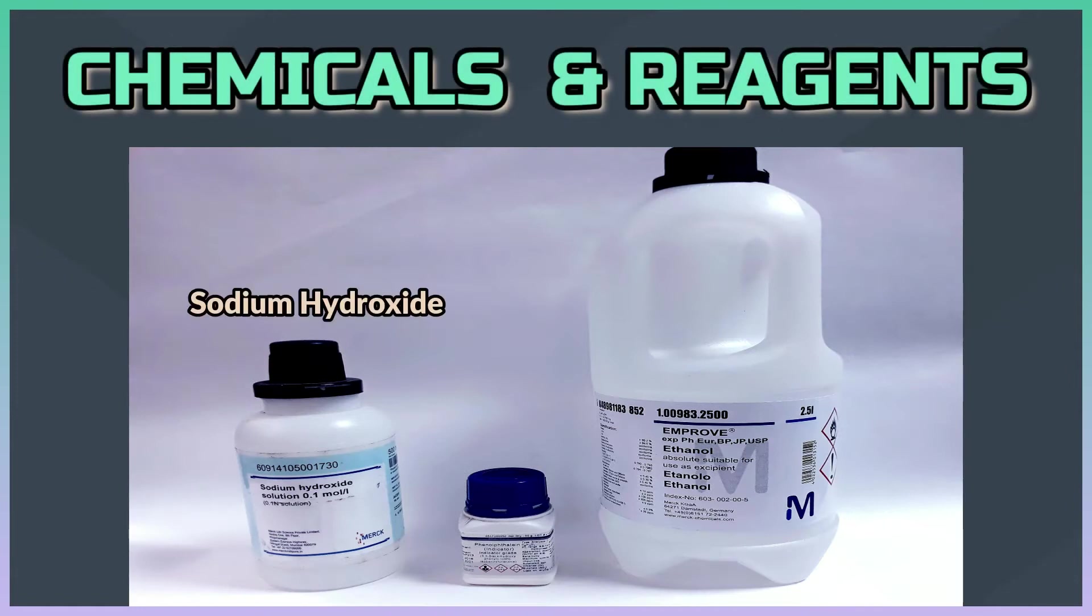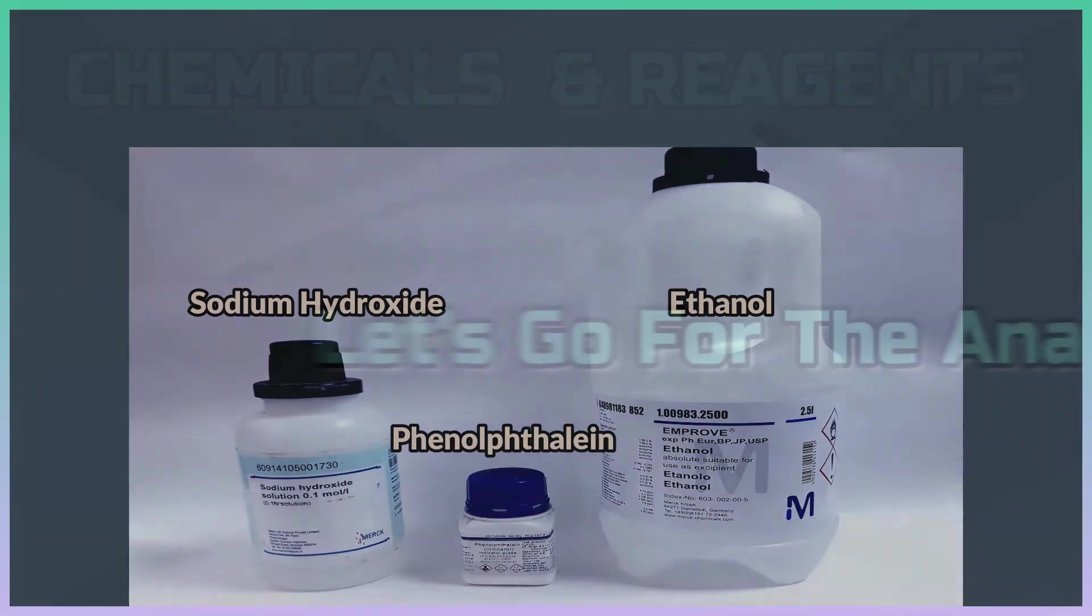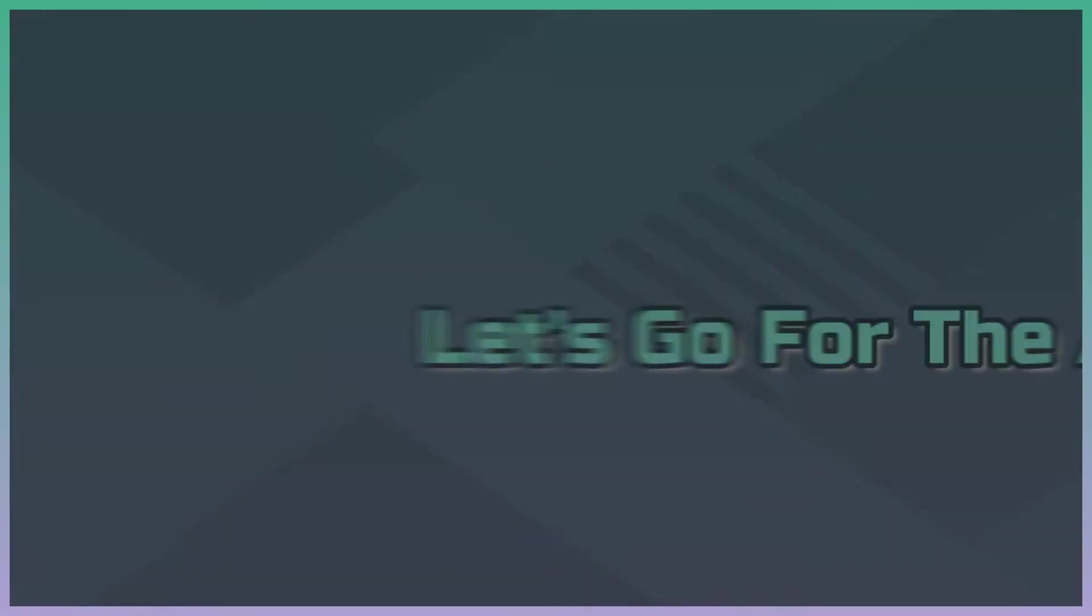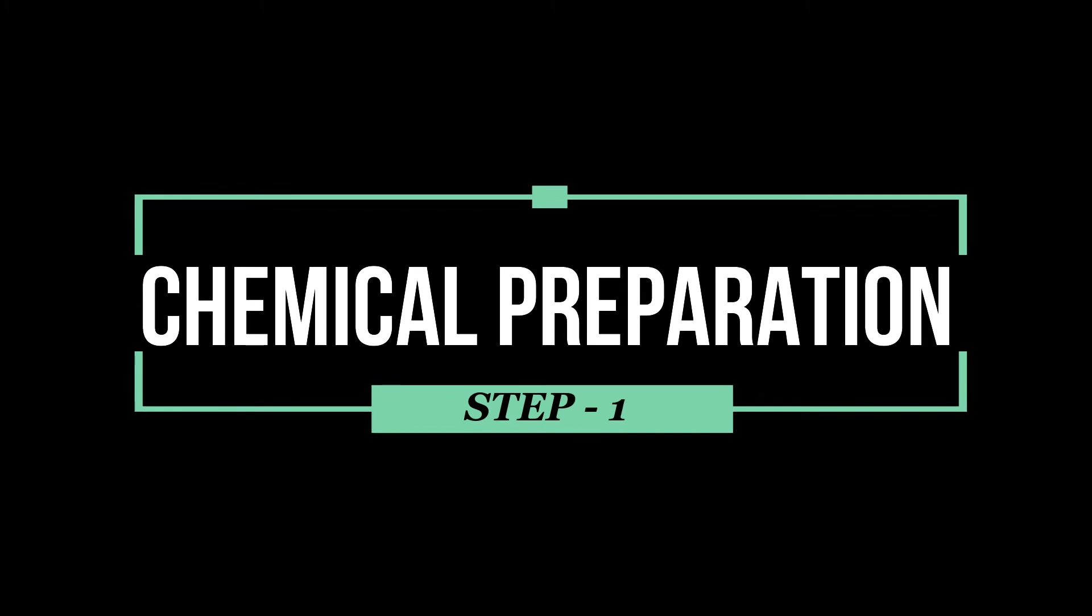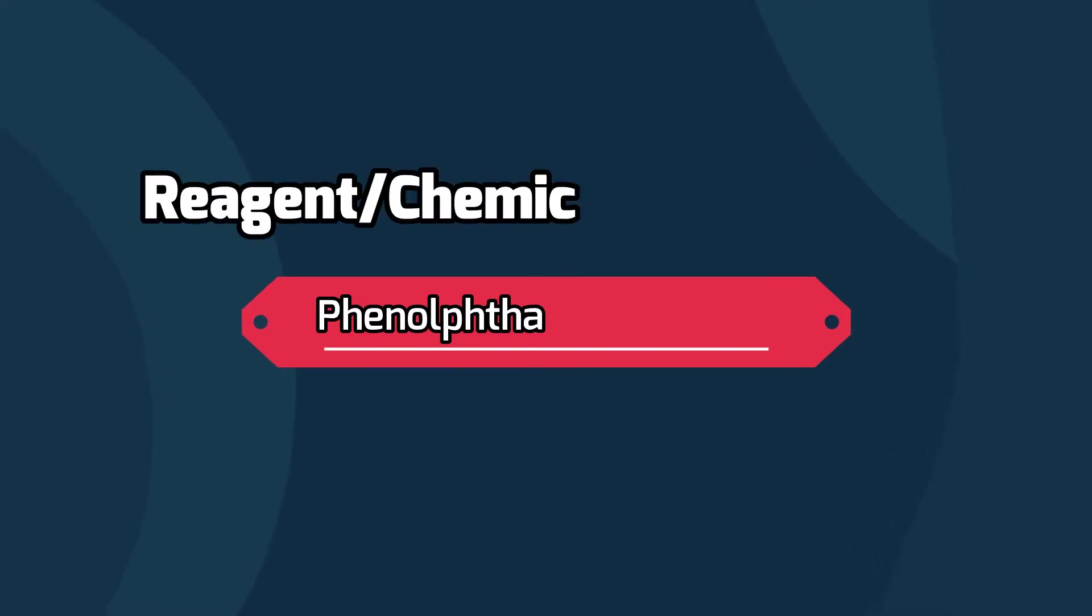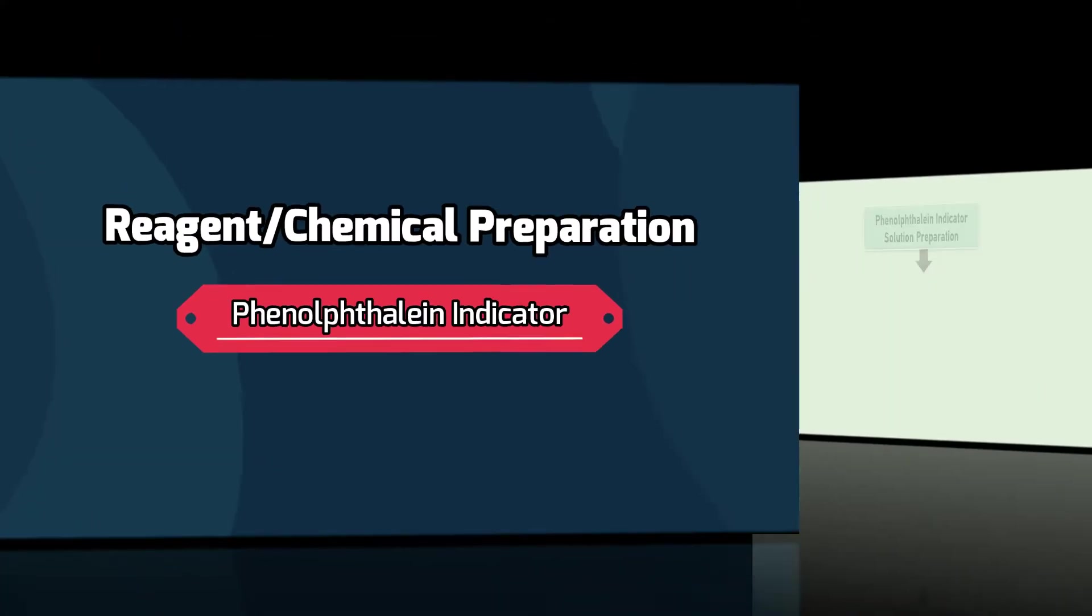Among the chemicals, we need 0.1 normal sodium hydroxide, ethanol, and phenolphthalein indicator. Let's start the analysis. Before going for the main test, we will prepare phenolphthalein indicator solution and 0.1 normal sodium hydroxide.